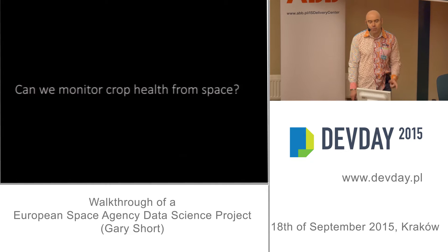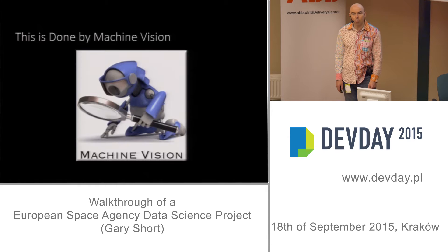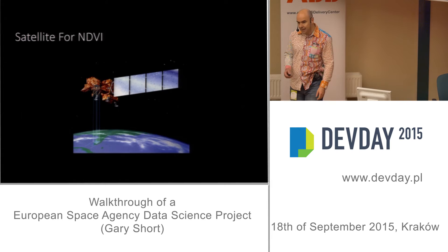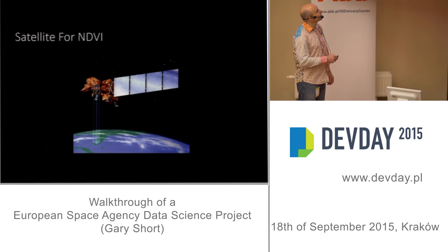To monitor crop health from space, we first need to know what we mean by crop health and how we're going to do it. We're going to use machine vision. We capture images by satellite — this is the Landsat satellite. Two things to note about this image: firstly, it doesn't actually shine a big light over the Earth as it moves.